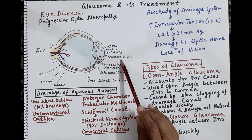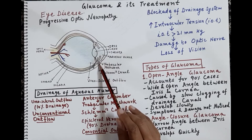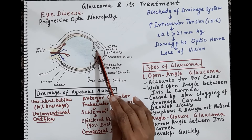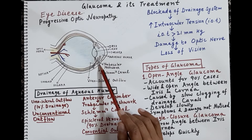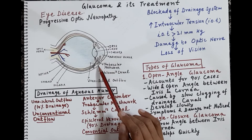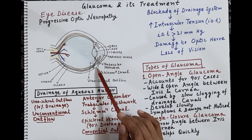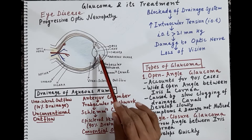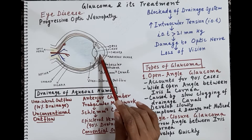This fluid is continuously produced by the ciliary body and continuously drained out of the eye. The production of aqueous humor should be balanced with its drainage. If this balance is disturbed — if there is increased secretion or reduced drainage — it causes accumulation of aqueous humor in the eye, and the intraocular pressure increases.